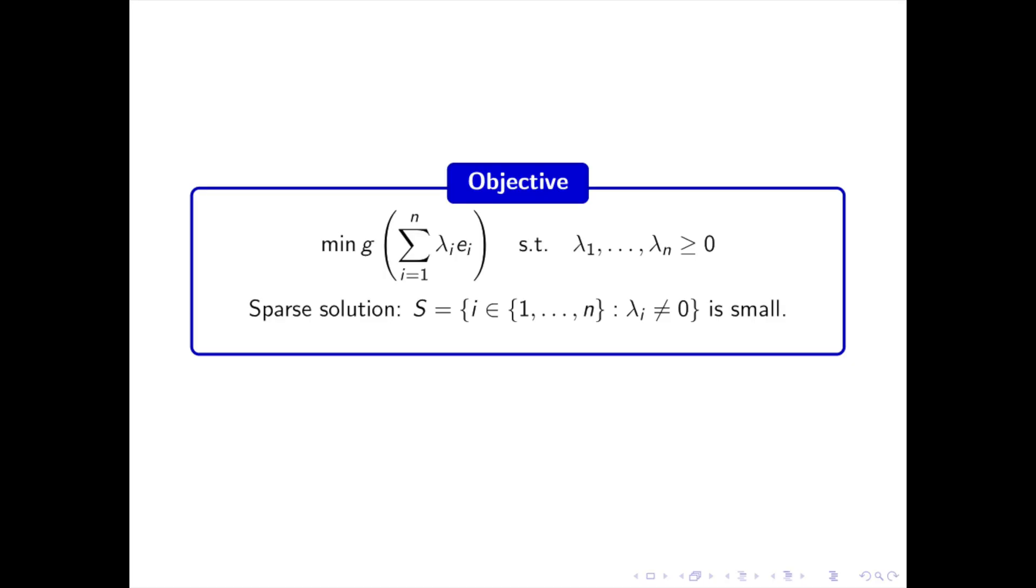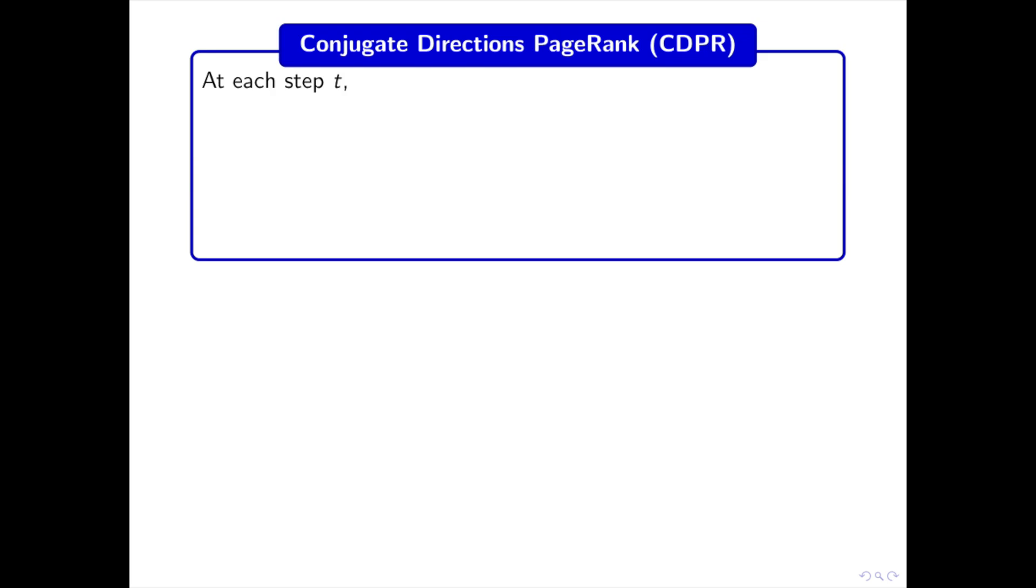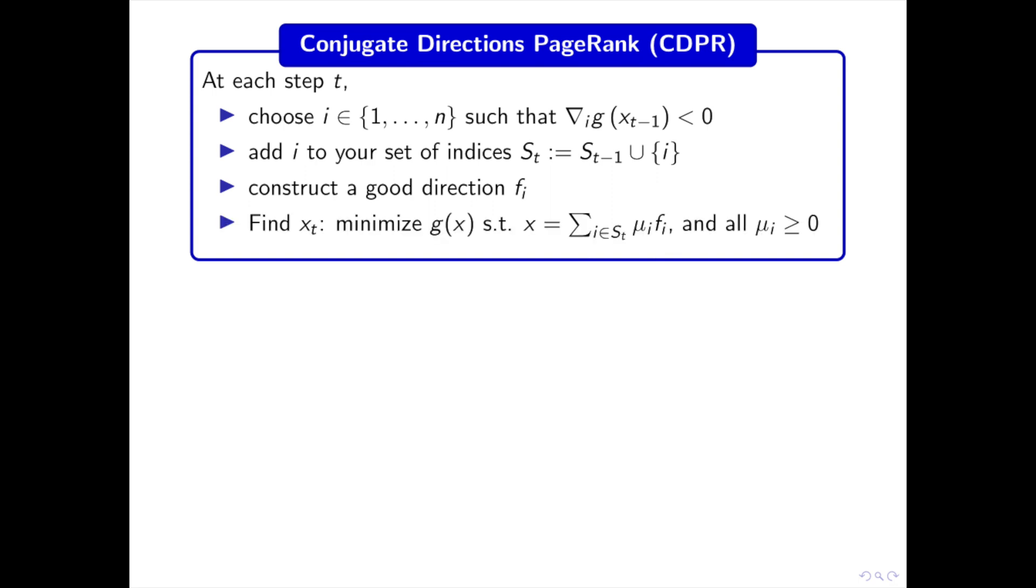Now recall that our objective is to minimize G of the sum of λ_i e_i for λ_1, λ_2, ..., λ_n non-negative, and that there is only a small set S of indices i such that λ_i is not equal to 0. What we did with CDPR is that at each step, we selected one index j such that the j-th entry of the gradient of G is negative. Then we constructed a good direction f_j and optimized G along that good direction. In other words, at every step, we have a set of indices S_t. We add a new index j to the set S_t such that the j-th entry of the gradient of G is negative. We optimize G of the sum for i in S_t of λ_i f_i for λ_i non-negative. And we explain that the sequence of sets S_t is increasing toward S.